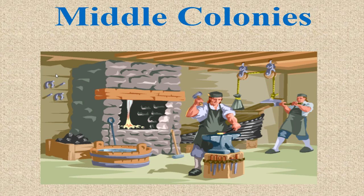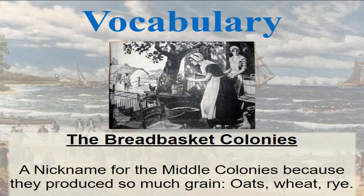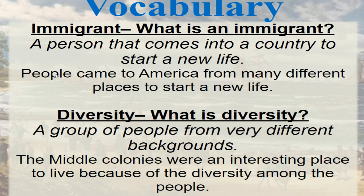Now let's talk about the middle colonies. The vocabulary word for the middle colonies is breadbasket colonies — a nickname because they produced grains such as oats, wheat, and rye. Another vocabulary word is immigrant: a person that comes into a country to start a new life. People came to America from many different places to start a new life. Another word is diversity: a group of people from very different backgrounds. The middle colonies were an interesting place to live because of the diversity among the people.